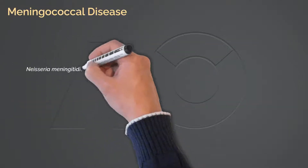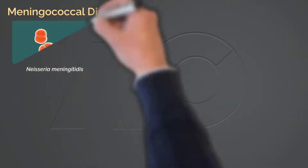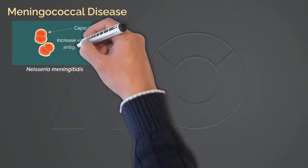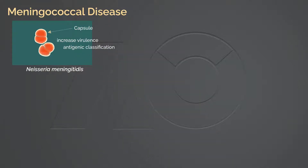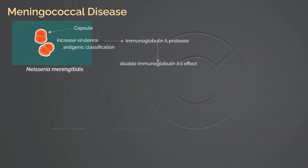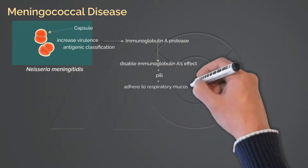Neisseria meningitidis is a non-motile, gram-negative diplococcus — its shape appears to be like two beads connected to each other. Like Haemophilus influenzae, Neisseria meningitidis also forms a capsule, which increases virulence and allows antigenic classification. In addition, it releases immunoglobulin A protease to disable immunoglobulin A, allowing the bacteria to invade through the protective barrier of respiratory mucosa. Another important structure is the pili, which allows the bacteria to hold on to the mucosa surface.